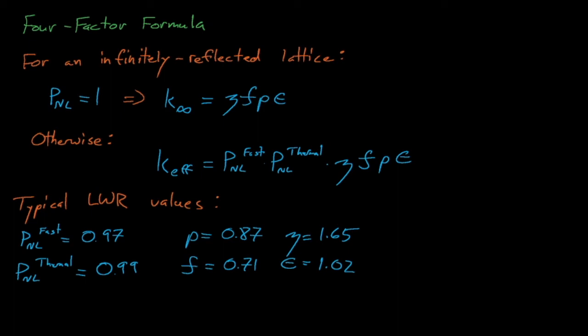The resonance escape probability is around 0.87. The thermal utilization factor is about 0.71. Eta is around 1.65, and the fast fission factor is about 1.02, which means that roughly 2% of all fission neutrons are generated by fast fission.